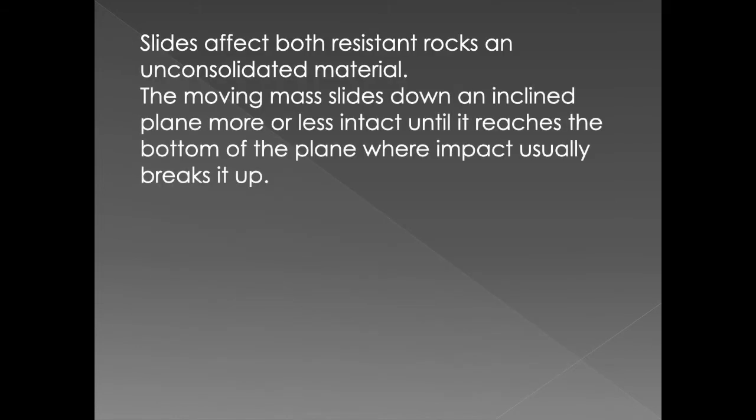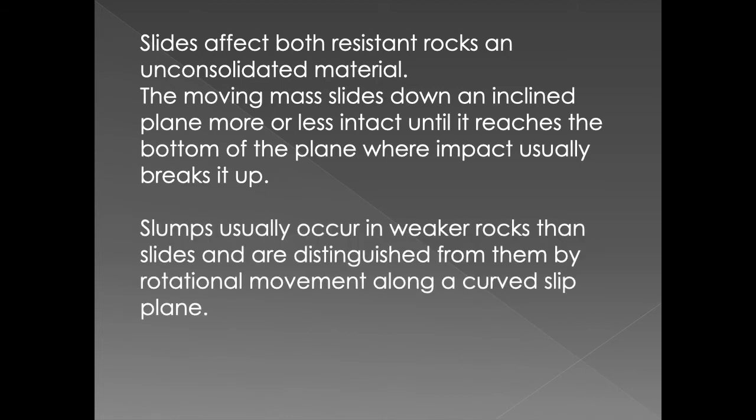Slides affect both resistant rock and unconsolidated material. If a slope's material is not consolidated and not binding to the parent rock, it will slide down the slope, usually breaking down as it gets to the bottom. It usually occurs in weaker rock. What happens is either rotational movement along these slopes because the soil becomes saturated, then sinks down and moves forward.